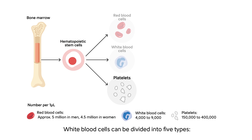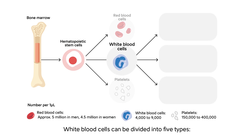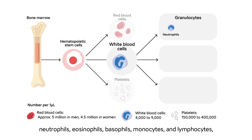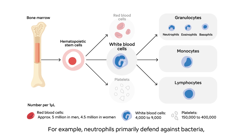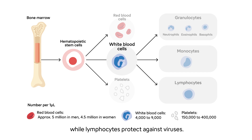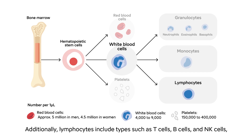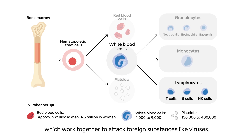White blood cells can be divided into five types: neutrophils, eosinophils, basophils, monocytes, and lymphocytes, each with specific roles. Neutrophils primarily defend against bacteria, while lymphocytes protect against viruses. Additionally, lymphocytes include types such as T cells, B cells, and NK cells, which work together to attack foreign substances like viruses.